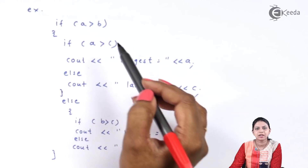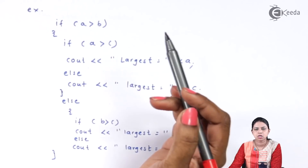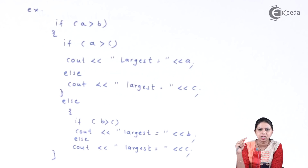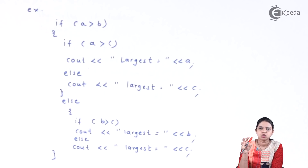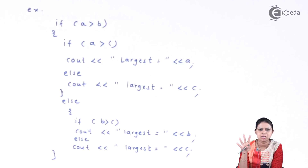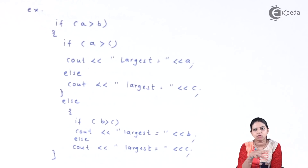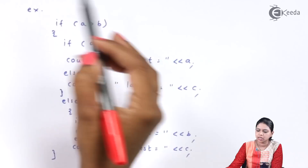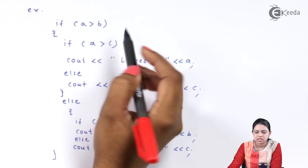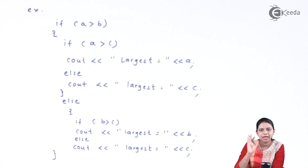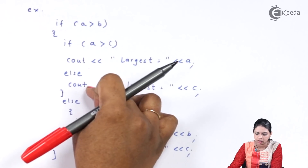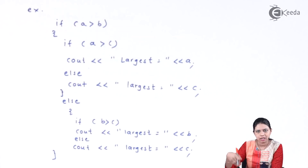Here I am checking the greatest number among three numbers A, B, and C. I have to check which number is greatest by comparing all three. I check whether A is greater than B, or greater than C, and so on. To find the greatest, I first check if A is greater than B, and if so, jump inside the inner if statement.